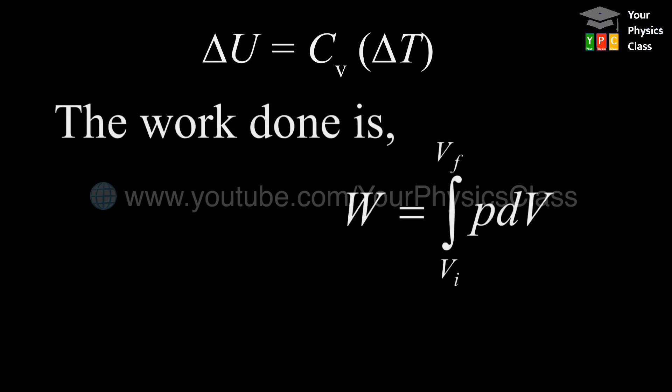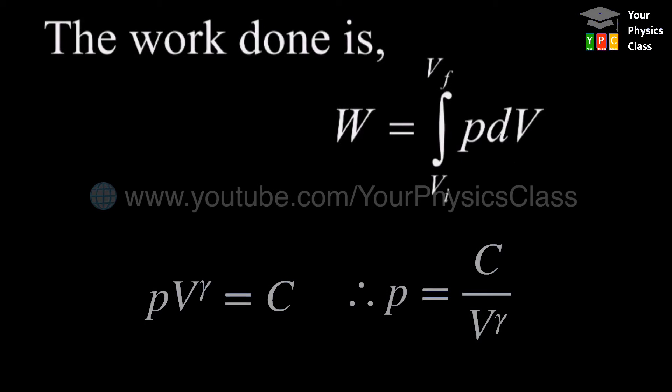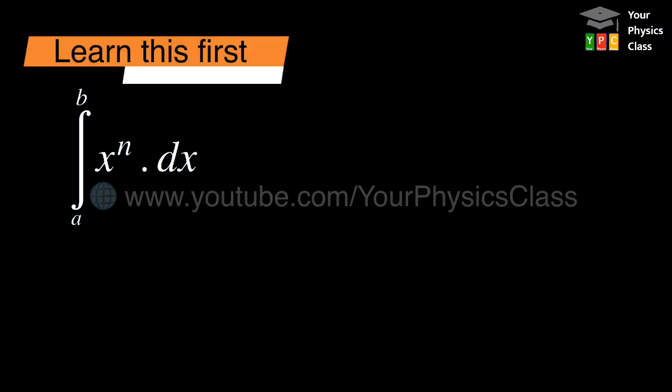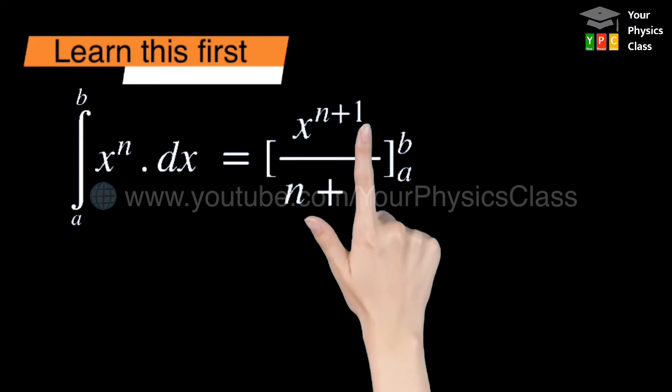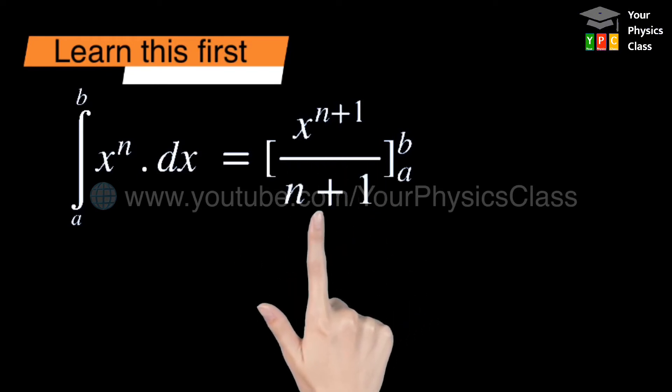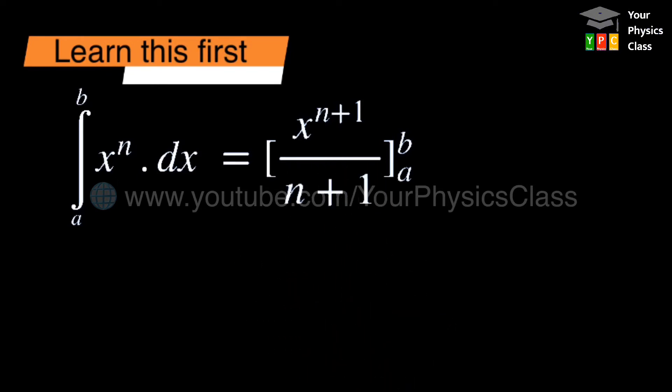Now the work done in this process is given by W equals integration from Vi to Vf of P into dV. This pressure is nothing but C upon V to the power gamma. To solve this integration, we are using the simple rule of integration. Students who don't have mathematics, kindly pay attention here. Integration of x to the power n between the limit a to b is given by x to the power n plus 1 divided by n plus 1, and we put the limit. So what we have done here: we have raised the power of variable by 1 and divided the variable by the same number.